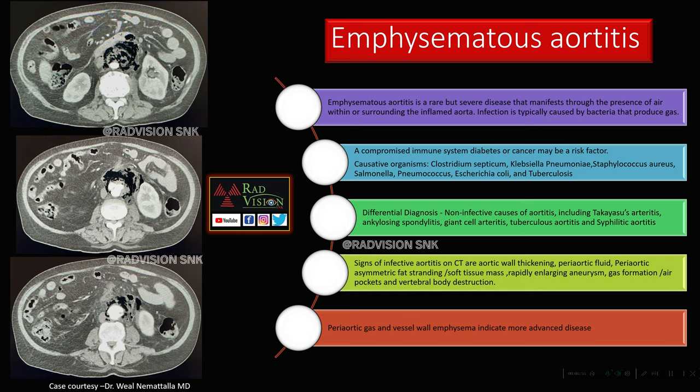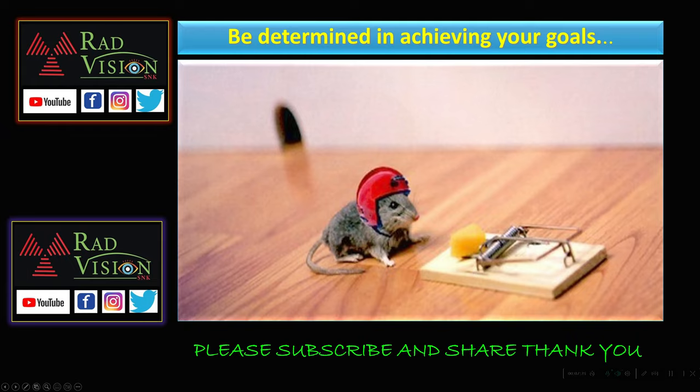Other causative organisms include Staphylococcus, Salmonella, Pneumococcus, E. coli, and tuberculosis. Non-infectious differential diagnoses include Takayasu aortitis, ankylosing spondylitis, giant cell aortitis, tuberculous aortitis, and syphilitic aortitis. Imaging signs of infective aortitis are aortic wall thickening, periaortic fluid, periaortic asymmetrical fat stranding or soft tissue mass, rapidly enlarging aneurysm, gas formation or air pockets adjacent to the aorta, and vertebral body destruction. Periaortic gas and vessel wall emphysema indicate more advanced disease.